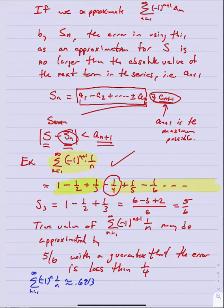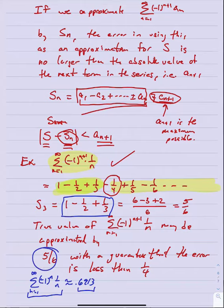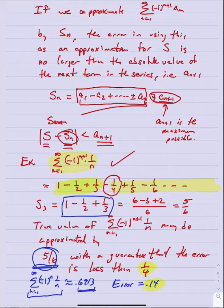The true sum will be revealed in a later section where we'll compute it exactly. For now: using s_3 = 5/6 as an approximation, we are guaranteed the error is no greater than 1/4. This is a safety guarantee — stopping at the third term means the error cannot exceed the absolute value of the fourth term.